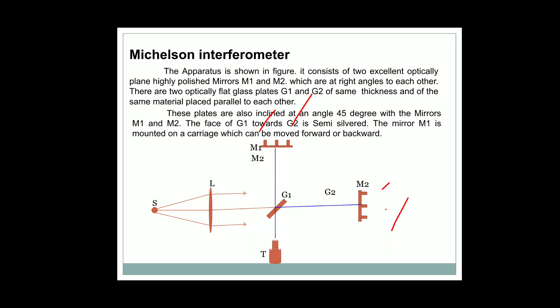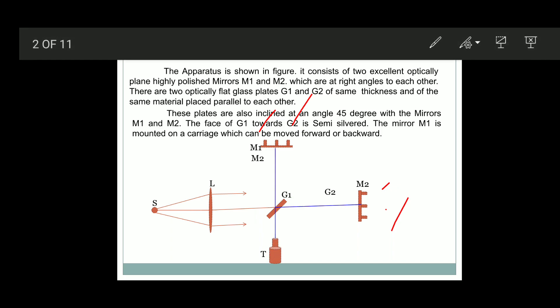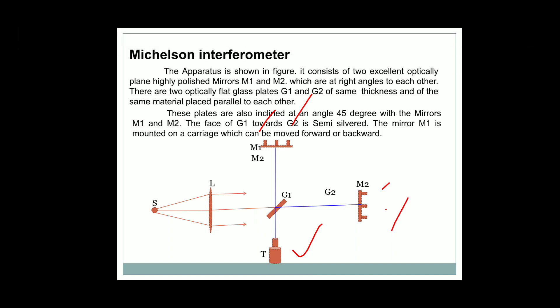T is the traveling microscope eyepiece, used to observe the interference fringes. Due to the interference, we can observe bright and dark rings or bright and dark fringes. G2 is one more glass plate, called the compensating plate, which we will discuss later.